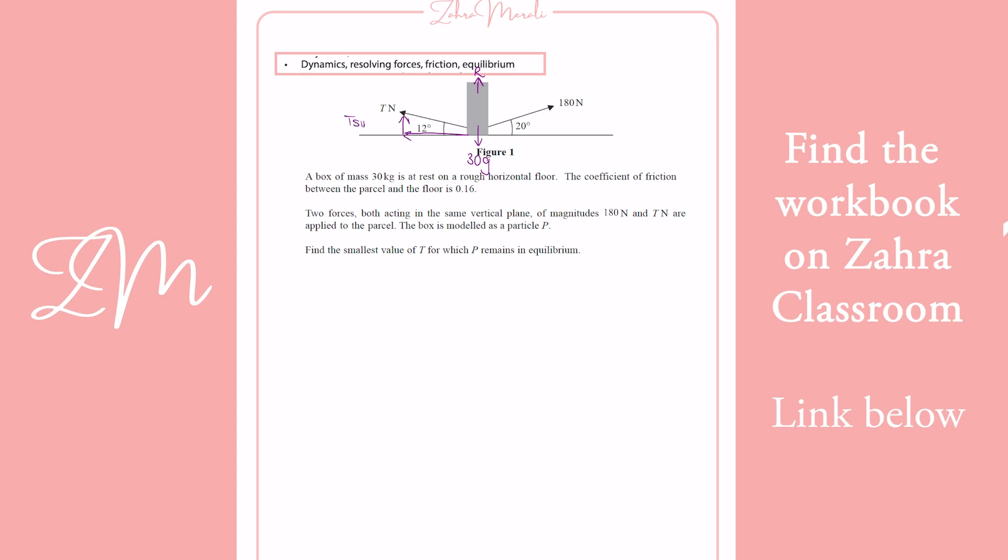This is going to be T sine 12, T cos 12. The reason is to go from this bottom of the arrow to the top of the arrow, you've got to go along and up.